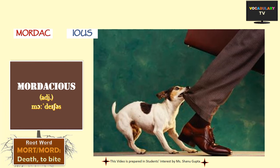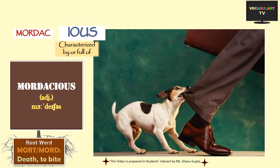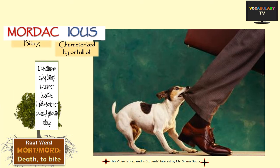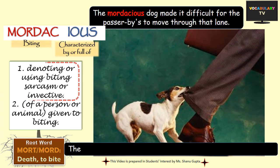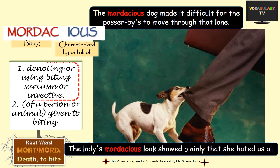Our last word in this lesson is 'mordacious'. It is used to describe someone who is characterized by biting habits, such as a mordacious dog. But in its prime meaning, mordacious is something that denotes or uses a biting sarcasm or invective. For instance, the lady's mordacious look showed plainly that she hated us all.